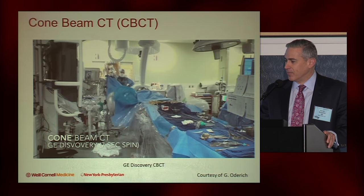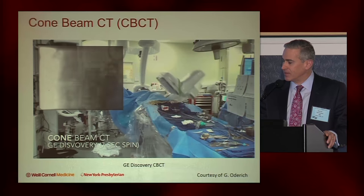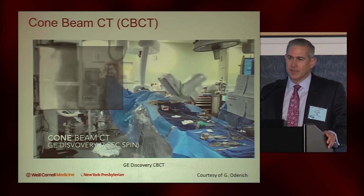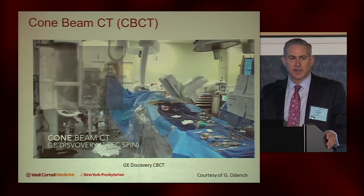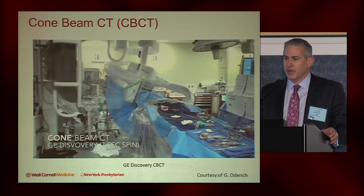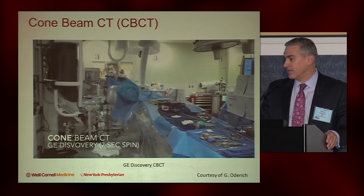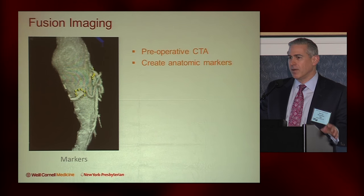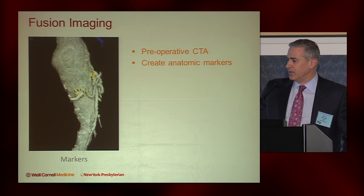We already saw an example of cone beam CT — this is a GE Discovery unit, Stefan Hollan's room. The concept with cone beam CT is that the C-arm gantry arcs about 270 degrees, collecting a lot of anatomic information that can be volumetrically reconstructed so that you effectively get CT scan data. The utility of this, especially for complex cases, is the ability to create three-dimensional overlays to help guide these procedures — and that's the concept of fusion imaging.